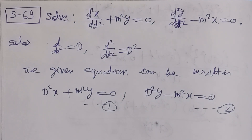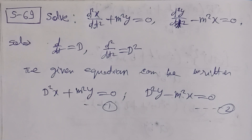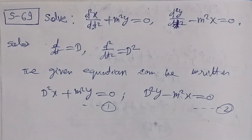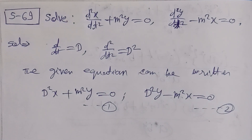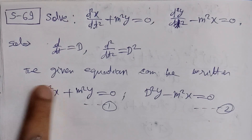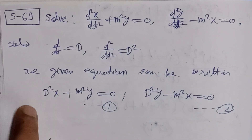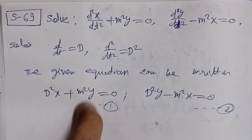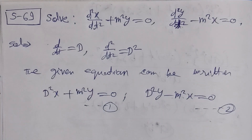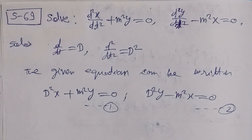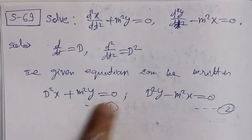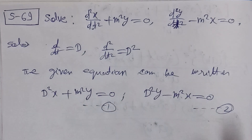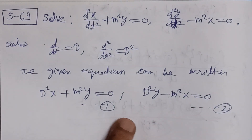To solve, we can either eliminate x first or eliminate y first. If we eliminate y, we get the value of x. Then using x's value, differentiating twice with respect to t and putting d²x into equation 1, we can find y. So first we will eliminate y from both equations.